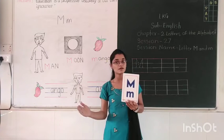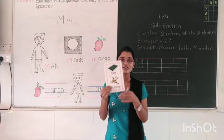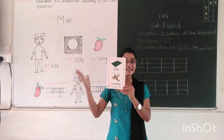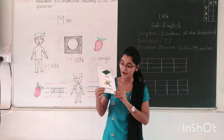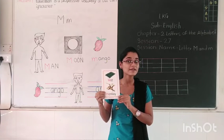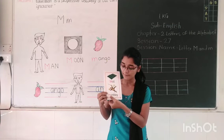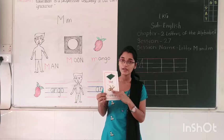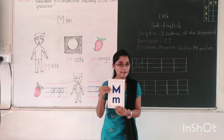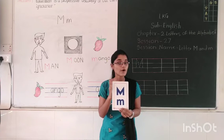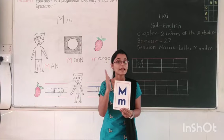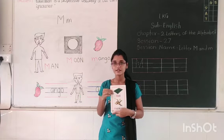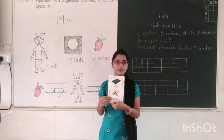And M for which animal is this? Tell me. Monkey. This is monkey. And what is the spelling of monkey? M-O-N-K-E-Y, monkey. So this is letter M. What is the sound of letter M? M says m. And M for mat and monkey.